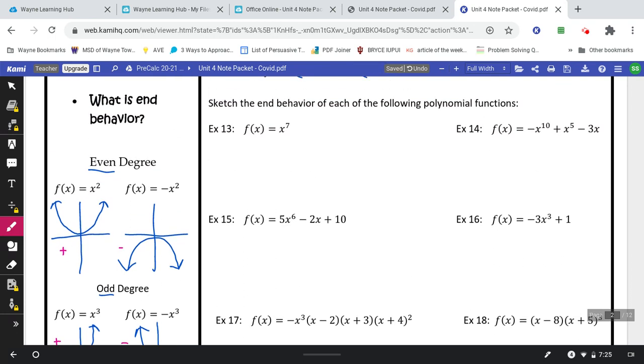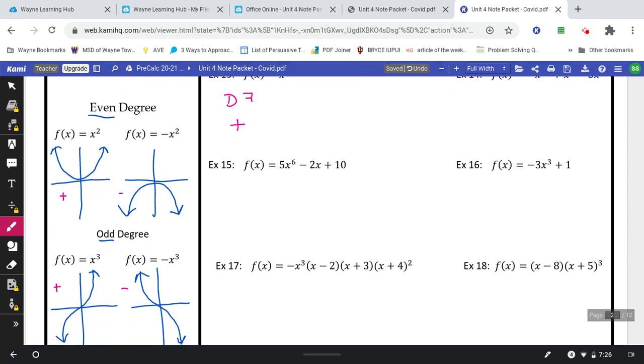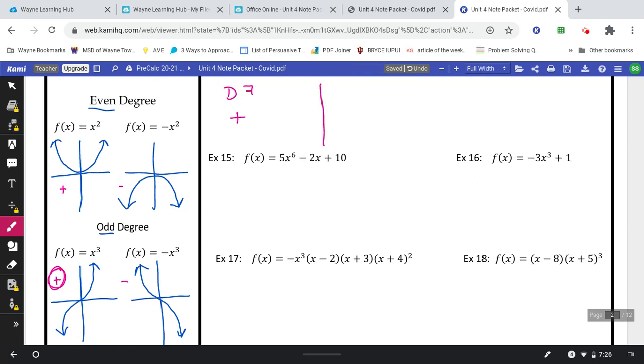Let's look at example 13. This is x to the seventh, which means it's a degree seven, and it's a positive. So the very first number, very first sign we see is a positive. So a degree seven is odd, and it's a positive, meaning it's going to look like this right here. So I'm just going to sketch out a little graph like that.